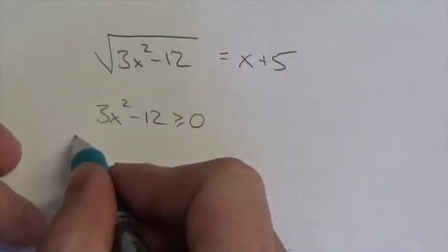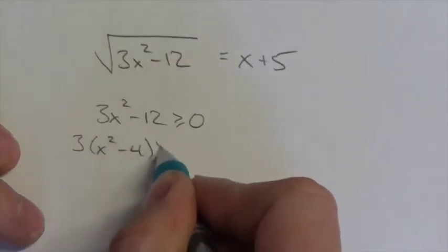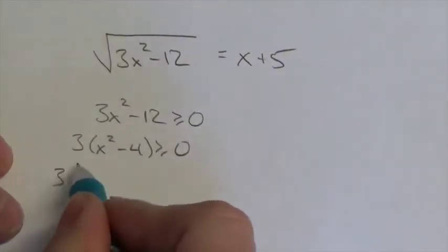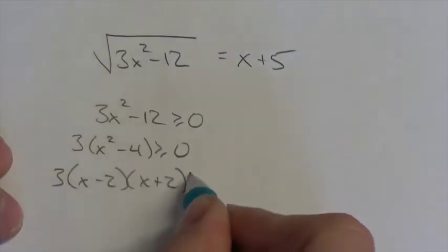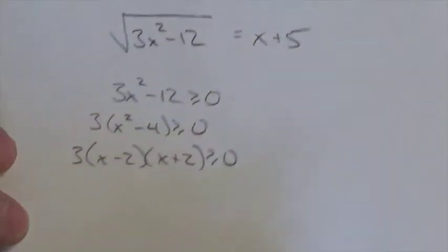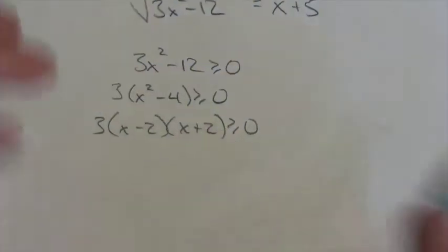One of them is to factor out the three, and so you're left with x squared minus four is greater than or equal to zero. And then factor this down, because that's a difference of squares. And so what you get here is three times x minus two times x plus two is greater than or equal to zero.